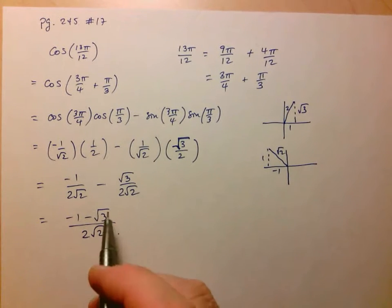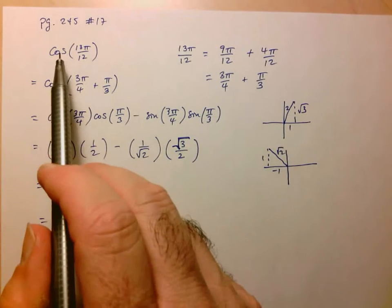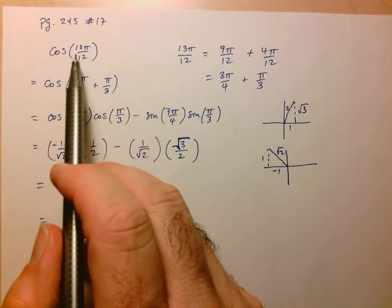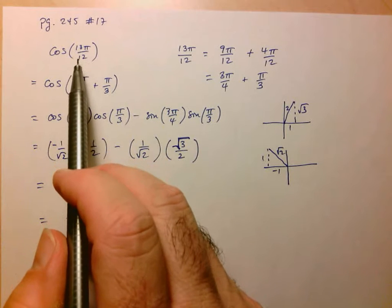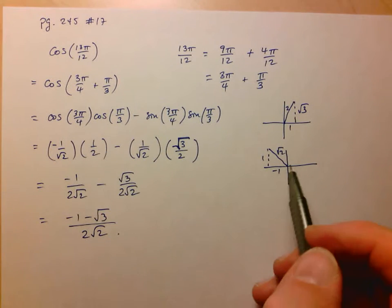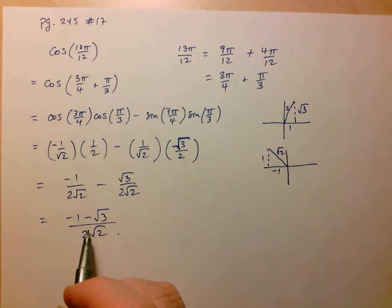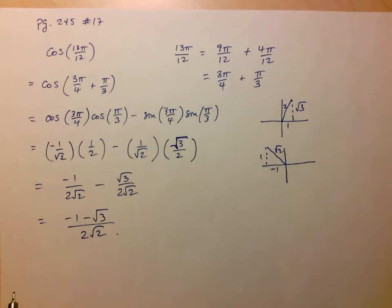Now as a quick check, you know that cosine is going to be negative in the third quadrant. This is clearly in the third quadrant because it's slightly bigger than π. So it's somewhere down there. So it makes sense that cosine is going to be a negative value.